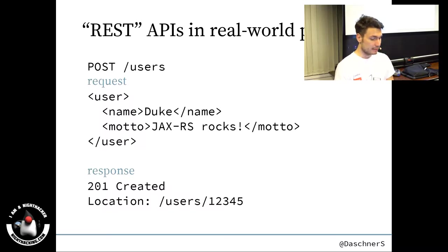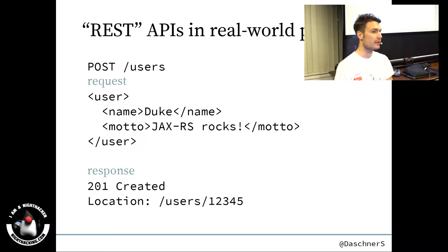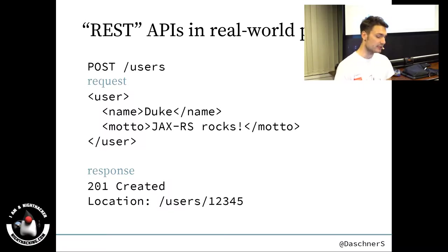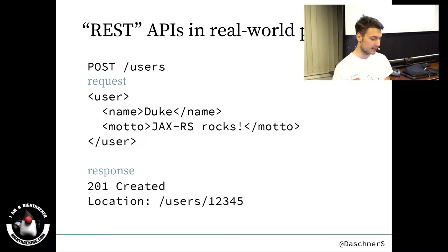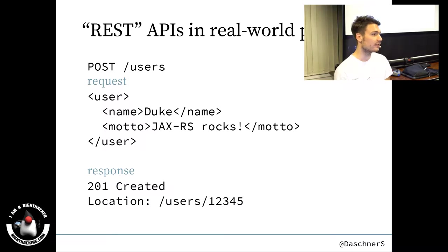Another example: to create a user, instead of calling 'create some user,' you POST a user in the request body to the users resource — the list of users — to create a new one. The response should not always be HTTP 200 OK. In this example, 201 Created is a much better match, as it says the server created a new resource. The Location header tells you where to find that new resource.